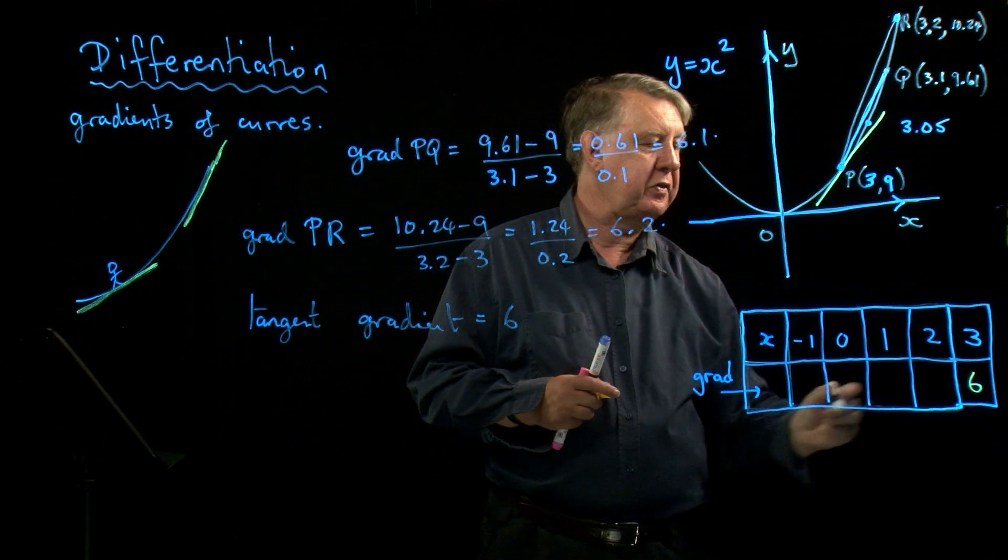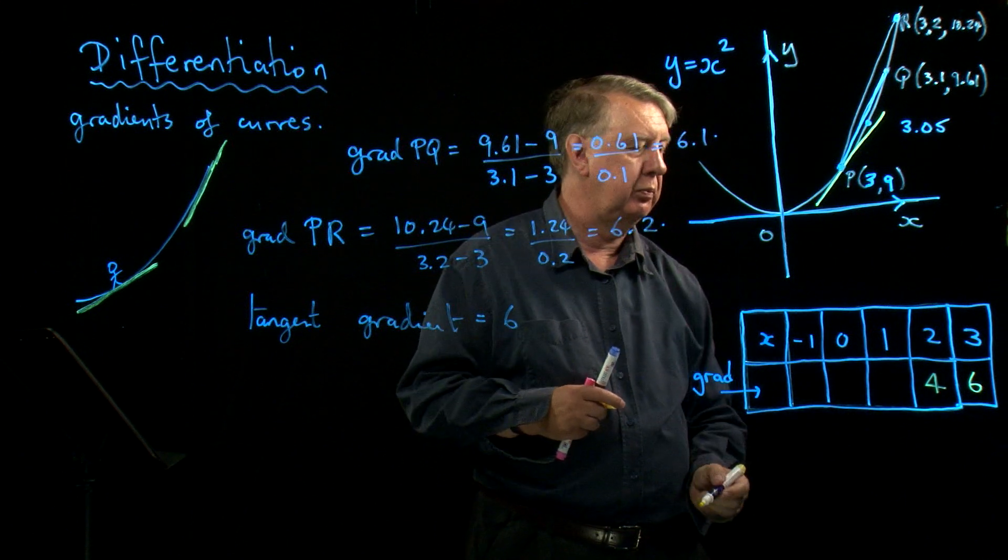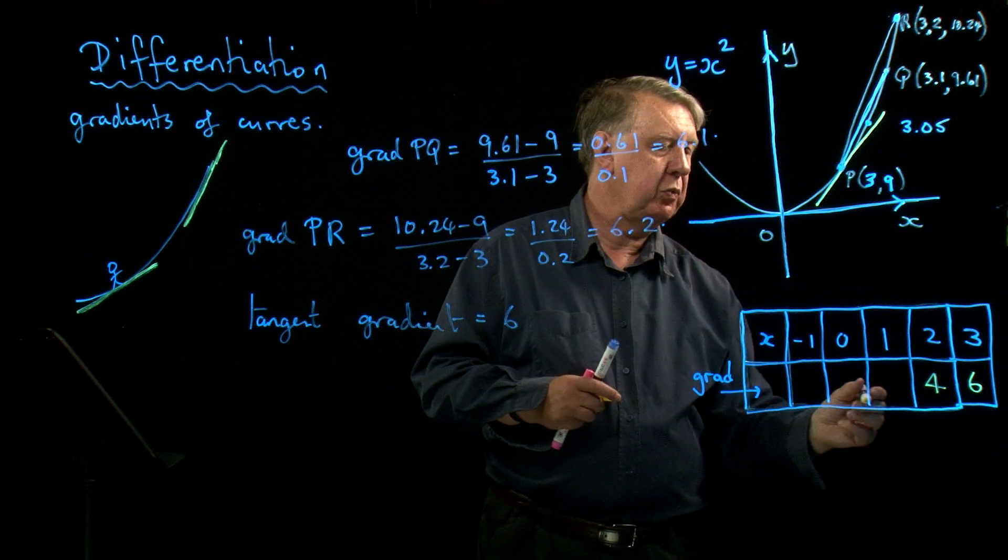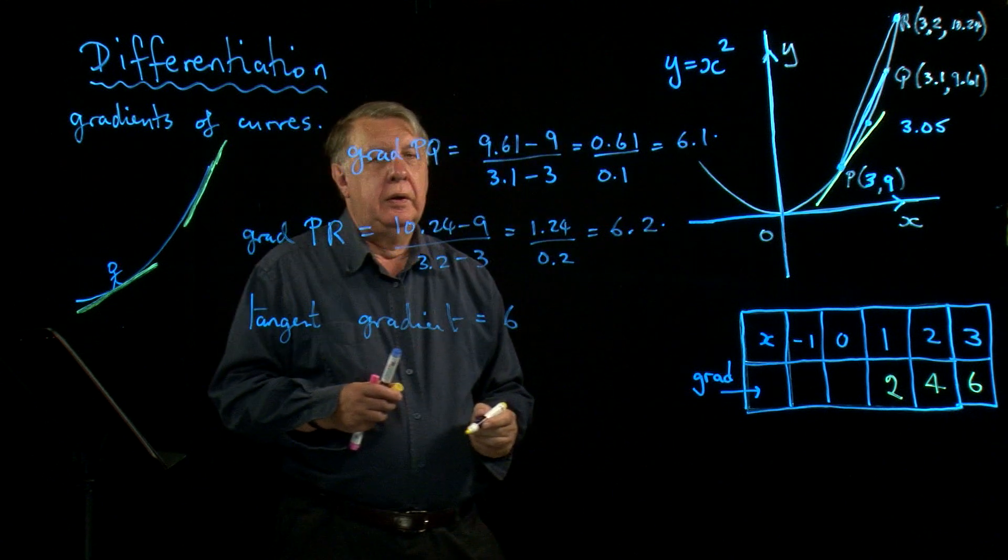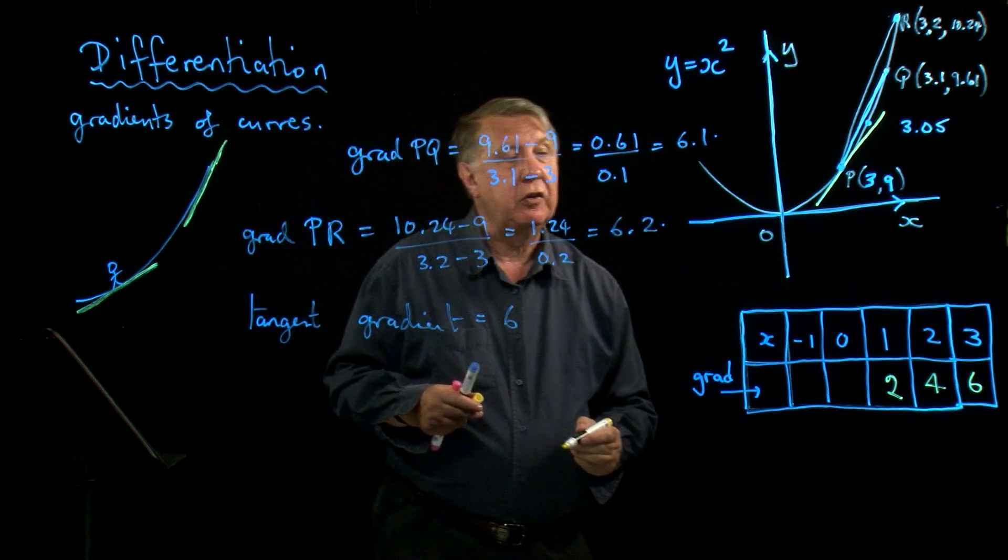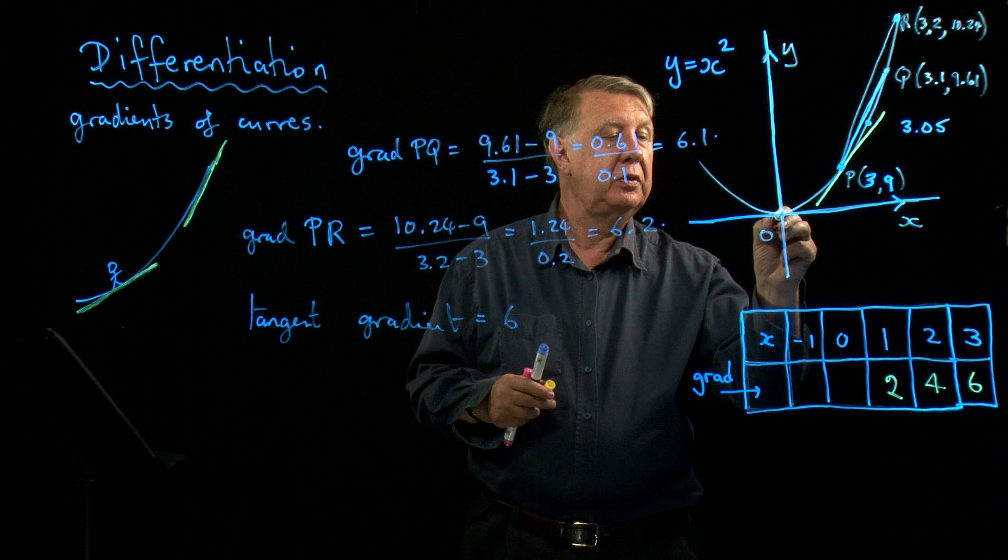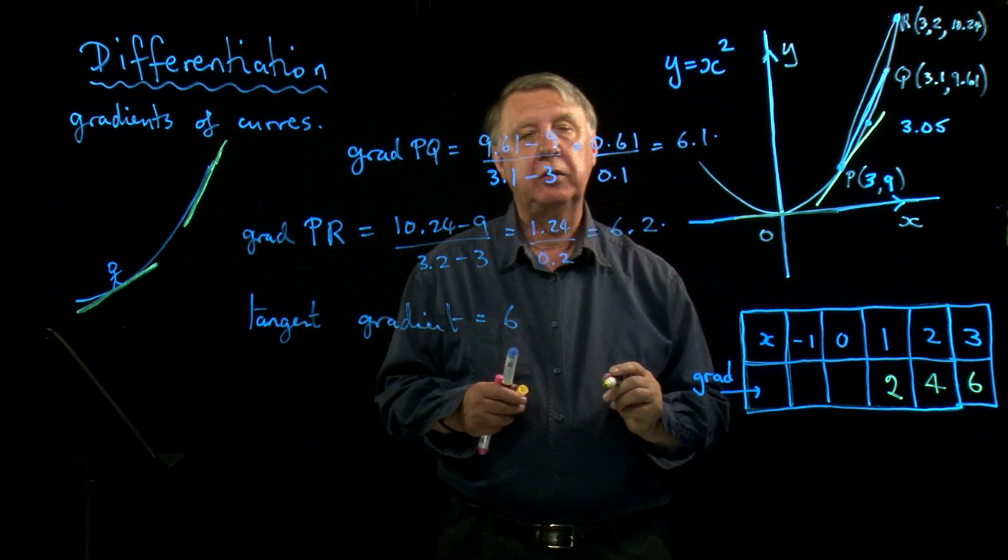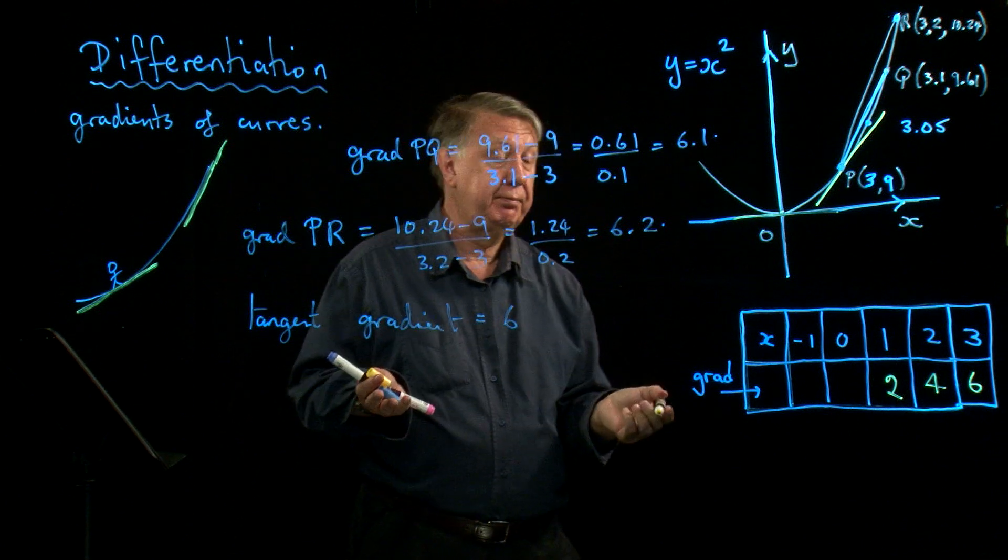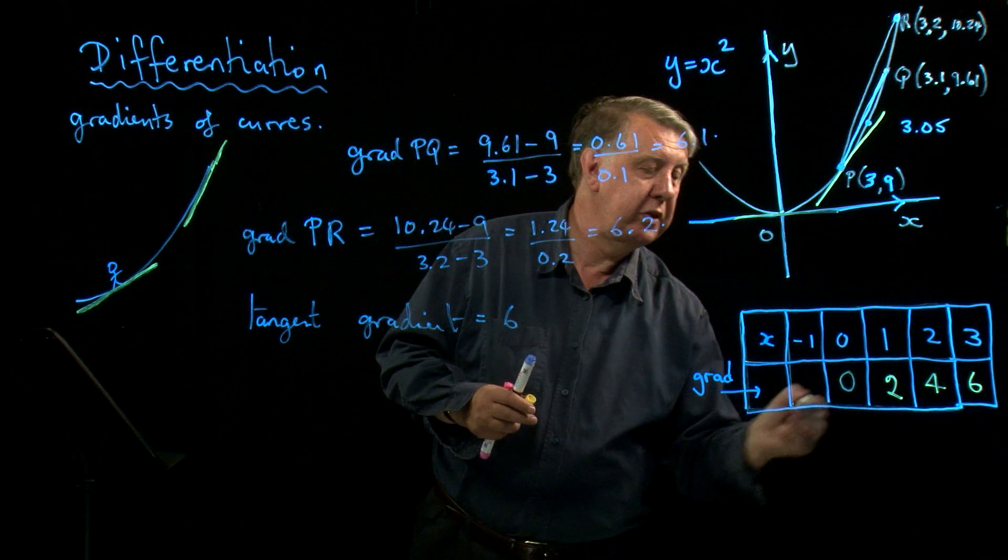I could do that all over this graph at all sorts of different places. If I do it when x is 2, I come out with the answer 4. If I do it when x is 1, I come out with the answer 2. Now 0 you could have got right yourself, because of course at 0, where is my tangent? It's horizontal, no gradient. So I could have put 0 in there to start with.